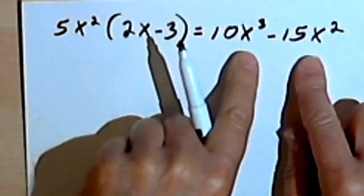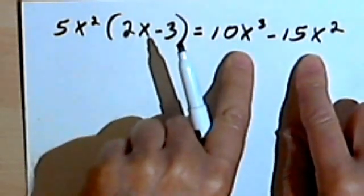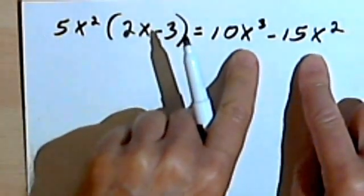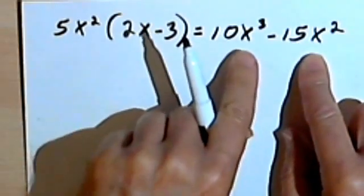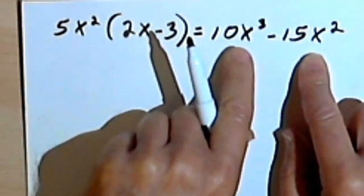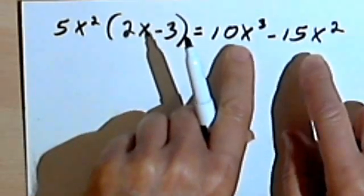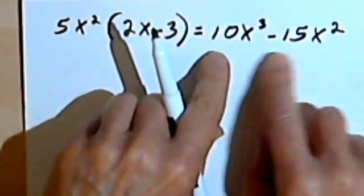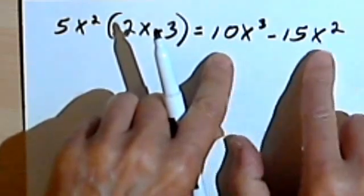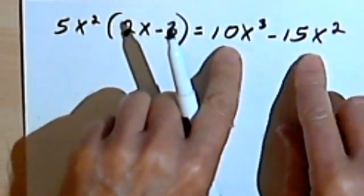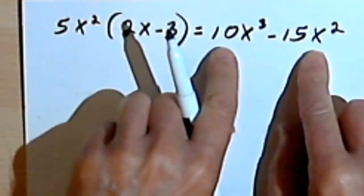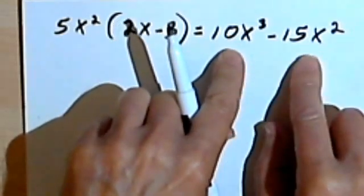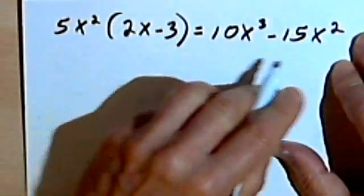Now if I had done this backwards and started with this and tried to get to here, I would be factoring this. When you factor something, you're looking for two things that you can multiply together — they may be just numbers, they may be polynomials — that will give you this solution. The numbers or polynomials that make this up are called the factors of the polynomial. So let's see how we got here.